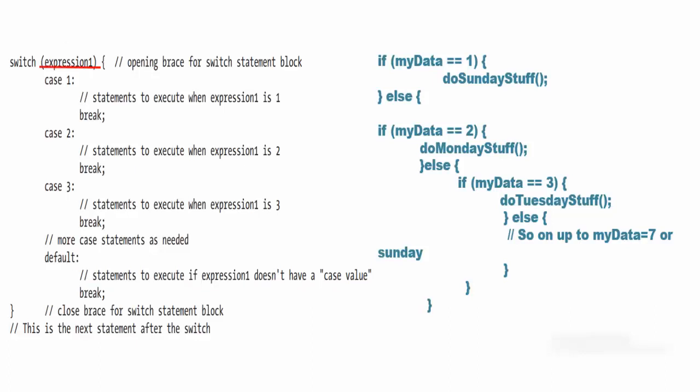The expression 1 must evaluate to an integral data type. That is, expression 1 could be a byte, character, integer, or long data type including the unsigned counterparts but it cannot be a floating point type and a reference data type.